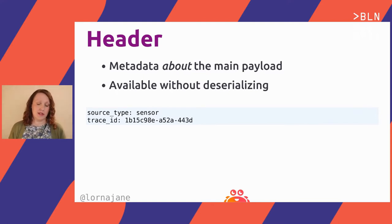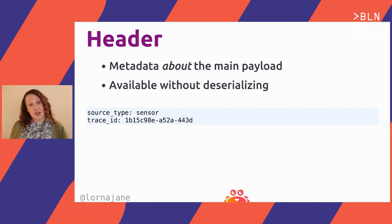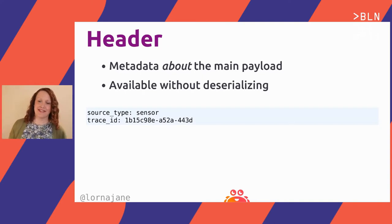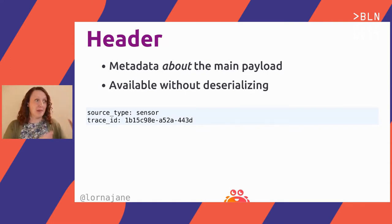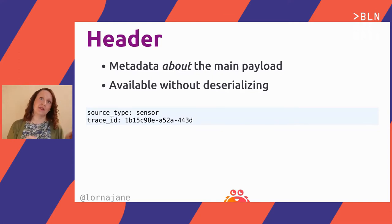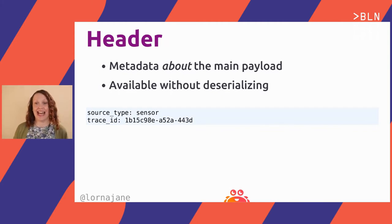For example, we might denote that this event is from a sensor, or put the trace ID in the header so that information can be logged by intermediate routing points without having to inspect or de-serialize the whole body of the payload. There's an overhead to de-serializing, and in financial or insurance applications, you wouldn't want every component a payload passes through to de-serialize and inspect all the details just to route it.